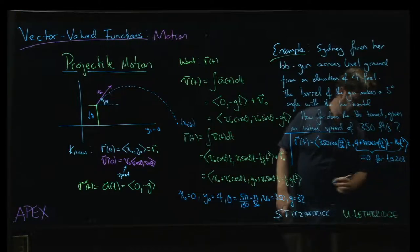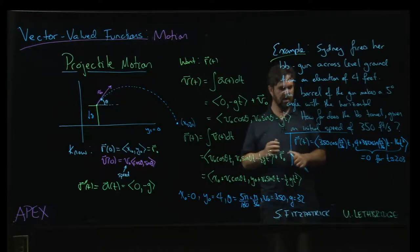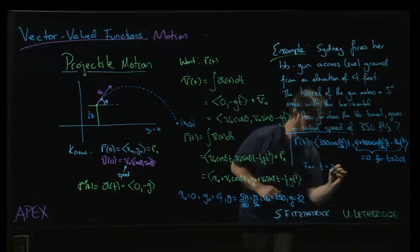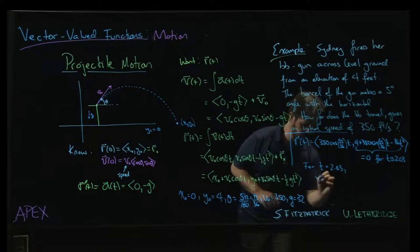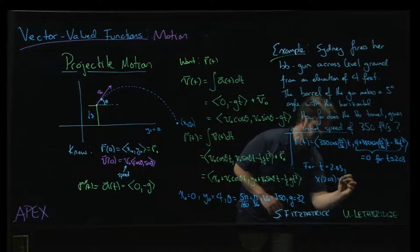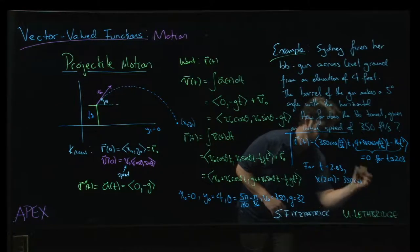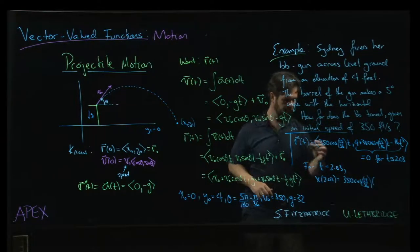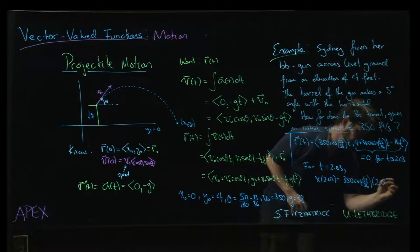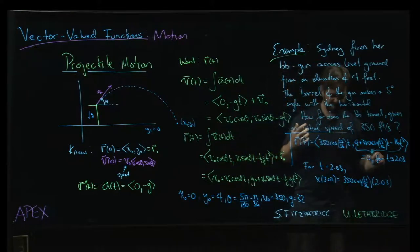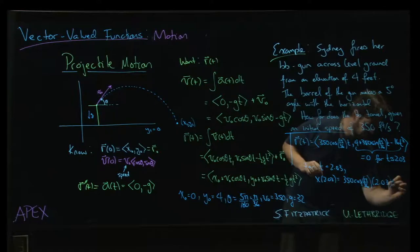Right, and so then for t equal to 2.03, well, x at 2.03 is going to be—you take the 350 times the cos(π/36) and multiply by 2.03. Again, it's calculator work to figure out what that is. I may be misremembering, but I think this comes out to be about 704.